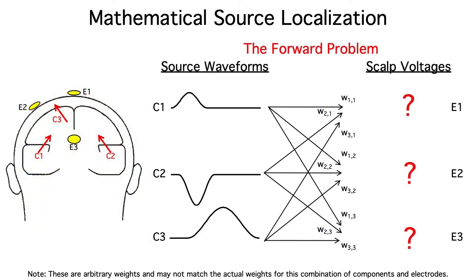This is called the forward problem, the problem of estimating the voltages in our scalp electrodes if we knew the locations, orientations, and source waveforms of the underlying components. And it's a straightforward, tractable physics problem.